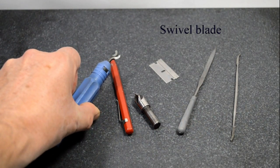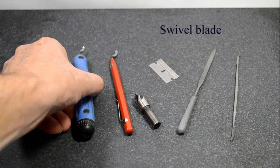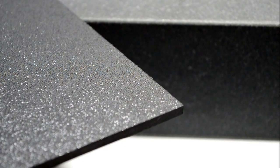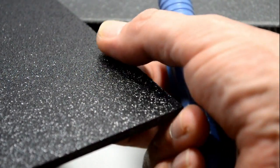First thing we'll look at is the swivel blade. Here it is cutting a corner.